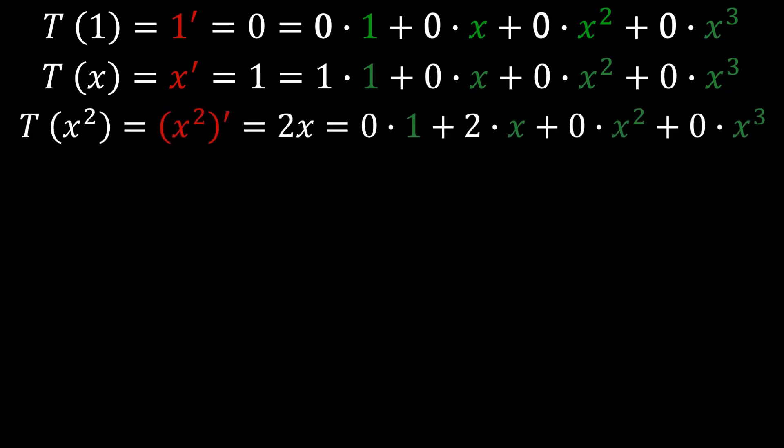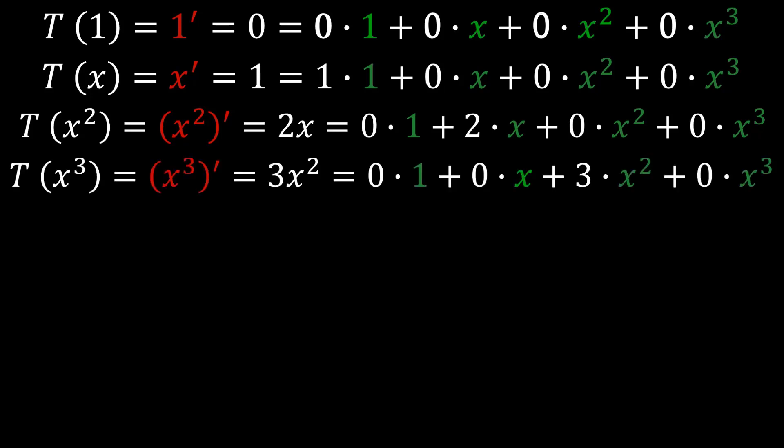T(x²) is the derivative of x², which is 2x. And 2x can be written as 0·1 + 2·x + 0·x² + 0·x³. T(x³) is the derivative of x³, which is 3x². And 3x² can be written as 0·1 + 0·x + 3·x² + 0·x³.